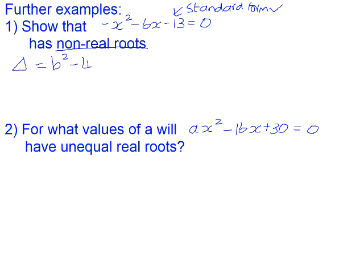So delta is b² - 4ac, which will be (-6)² - 4(-1)(-13). And that gives us a delta value of -16.